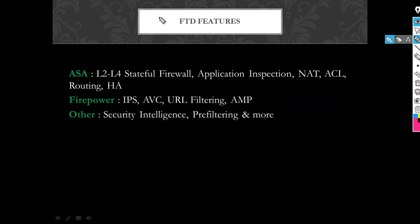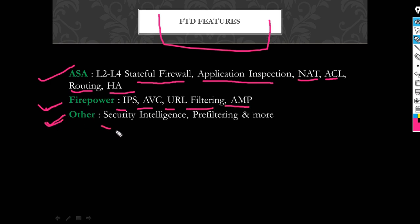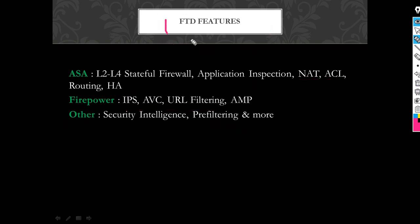These are the FTD features. It has ASA features, Firepower features, and other features. In ASA features we have L2L, stateful firewall, application inspection, NAT, SSL, routing, and high availability. Firepower features include IPS, AVC, URL filtering, and AMP. In other features we have security intelligence, pre-filtering, and more.